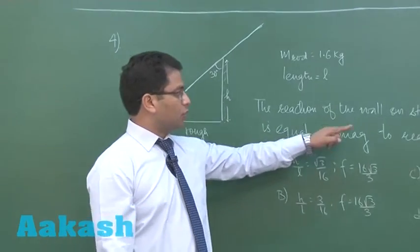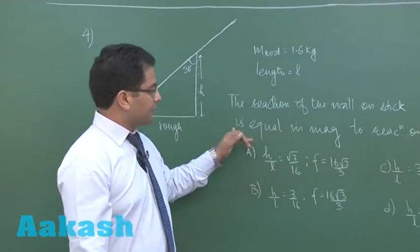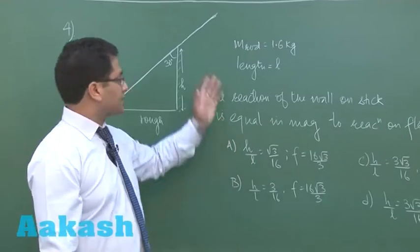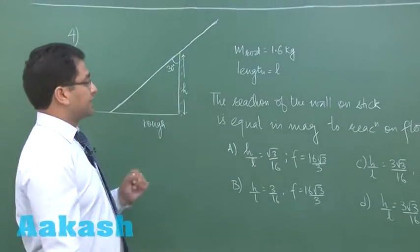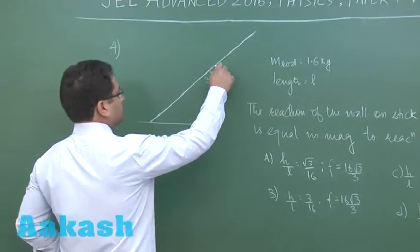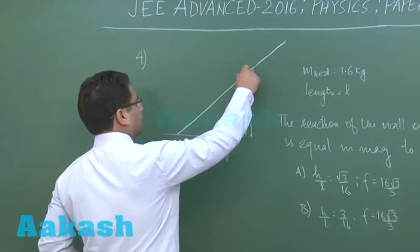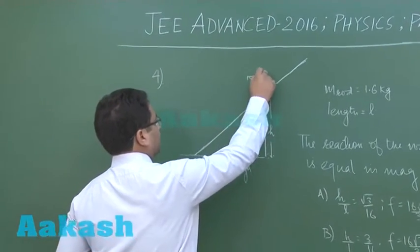Now it says the reaction of the wall on stick is equal in magnitude to reaction on floor. Let's say first of all reaction due to the wall on the stick. So let's call that as R.